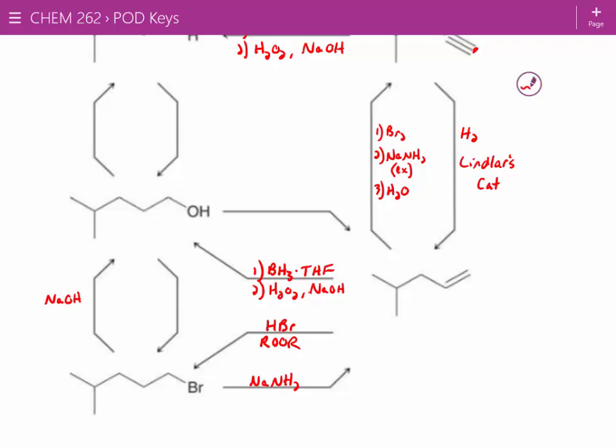If we want to go from the alcohol to the alkyl halide. Can there be other options for that one, though? Yep. There are other options. You can do tosyl chloride and pyridine, followed by sodium bromide. So you have to convert that alcohol into a good leaving group and then displace a good leaving group with sodium bromide.